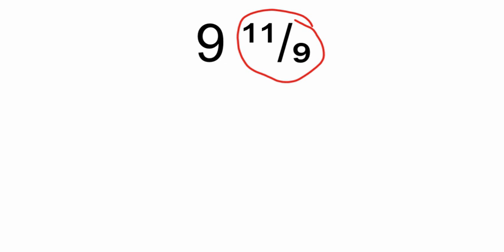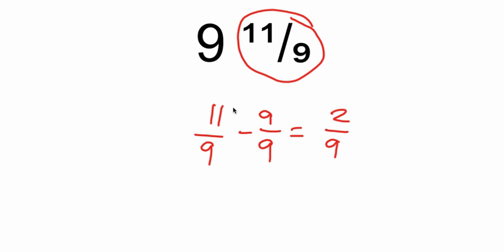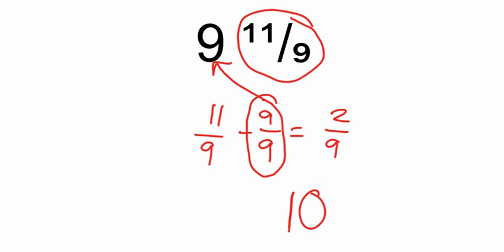Same thing here — right now we have an improper fraction. How many wholes can we take out of eleven-ninths? If I subtract nine-ninths — taking one whole out — I'm going to have two-ninths left, because eleven minus nine is two. I've taken that whole out, so I give it back to the first number, and I have ten and two-ninths.